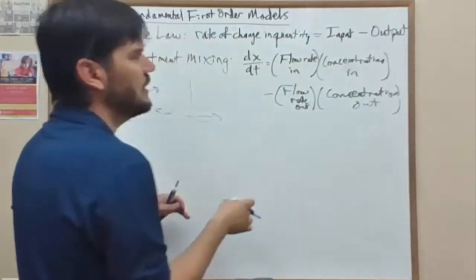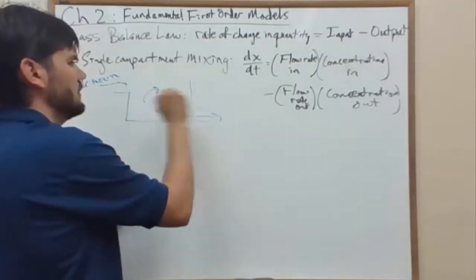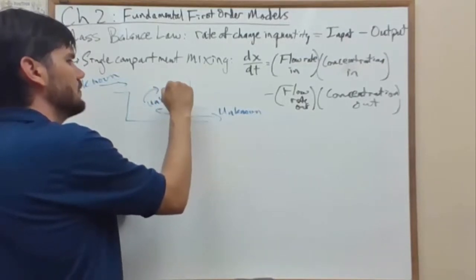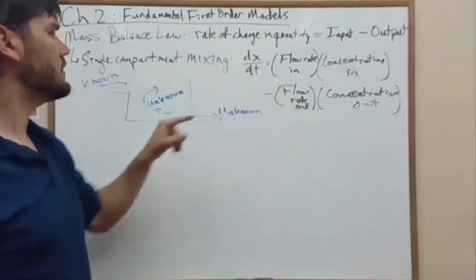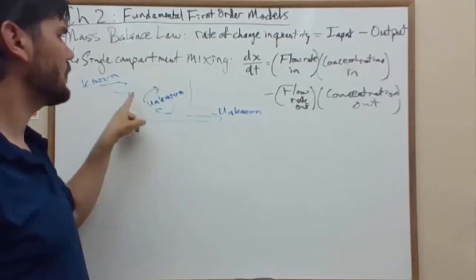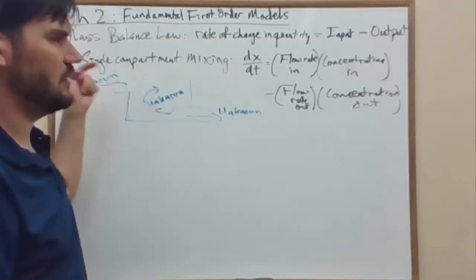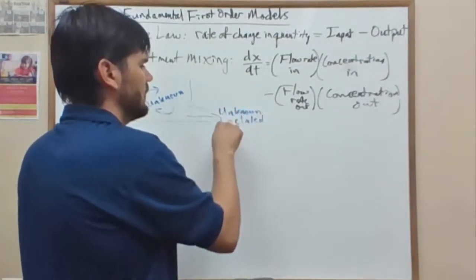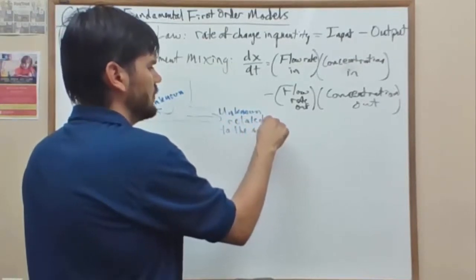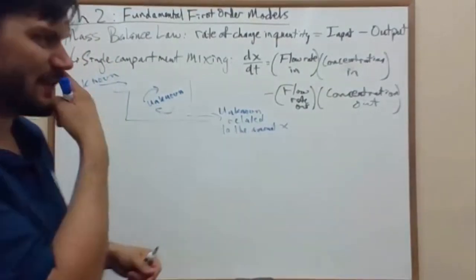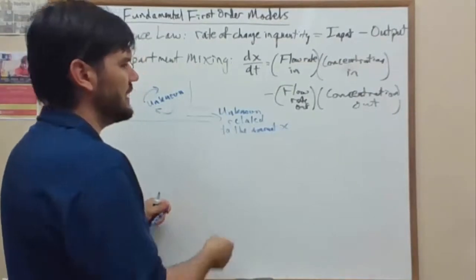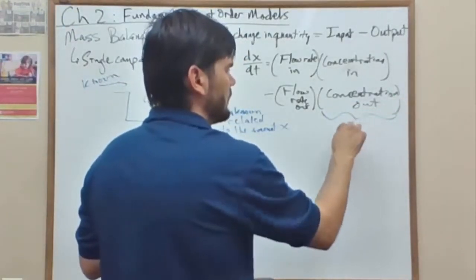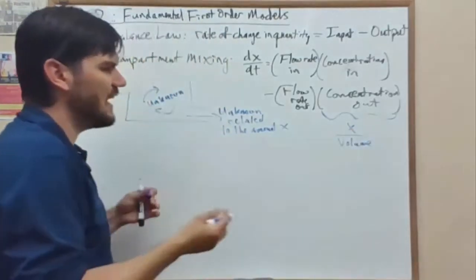So our flow rate in and our concentration in are known quantities, but our flow rate out is unknown because our amount inside is unknown. And so the rate of change of the amount of material inside this tank that's being mixed changes based upon a known input but an unknown output related to the amount x. Because the concentration out is going to be the amount x on the inside divided by the volume.